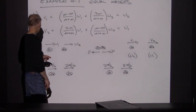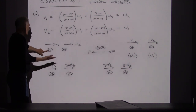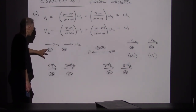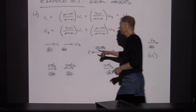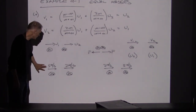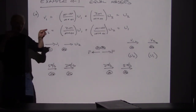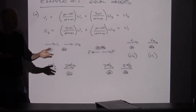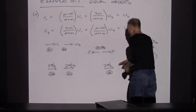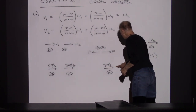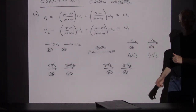Putting in some numbers: before the collision, object 1 is traveling at 5 meters per second and object 2 at 2 meters per second — relative speed of 3. After the collision, they switch values: object 1 is traveling at 2 and object 2 at 5. The speed of separation matches the speed of approach.